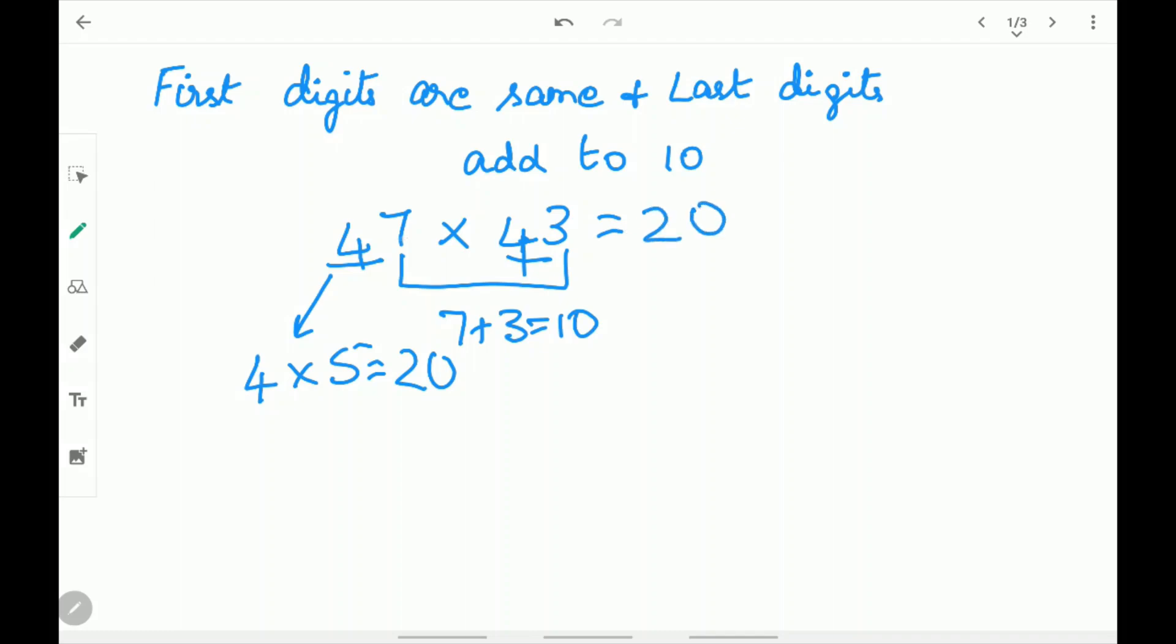Next you need to multiply 7 times 3, which are the last digits. 7 times 3 is 21. Next write 21 over here. The answer for 47 times 43 is 2021.